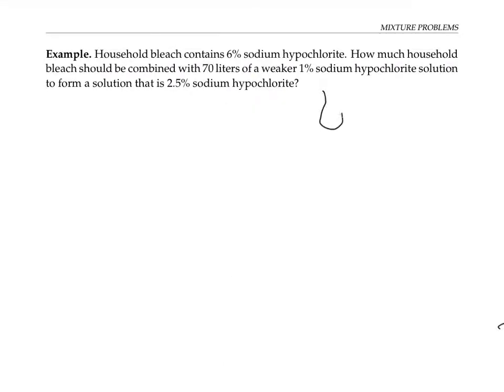Household bleach contains 6% sodium hypochlorite. The other 94% is water. How much household bleach should be combined with 70 liters of a weaker 1% hypochlorite solution in order to form a solution that's 2.5% sodium hypochlorite?